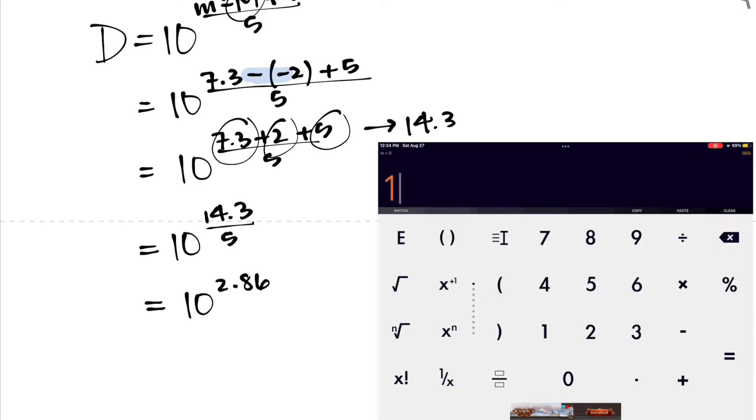And then when I do that, when I actually take 10 to the power of 2.86, which I'll do right now, so 10 to the power of 2.86, that gives me 724.43596 and so on. So in this case,